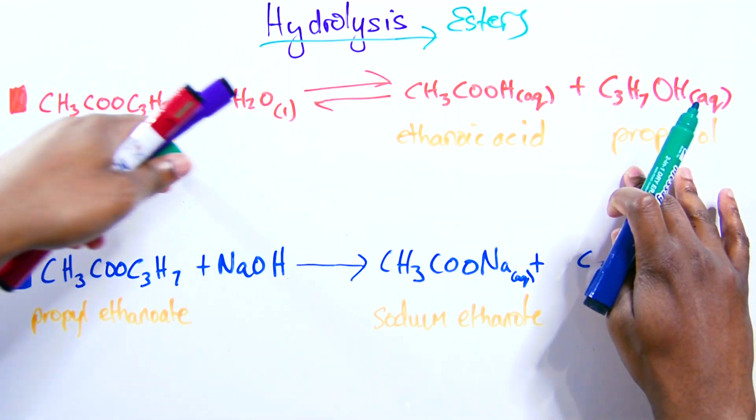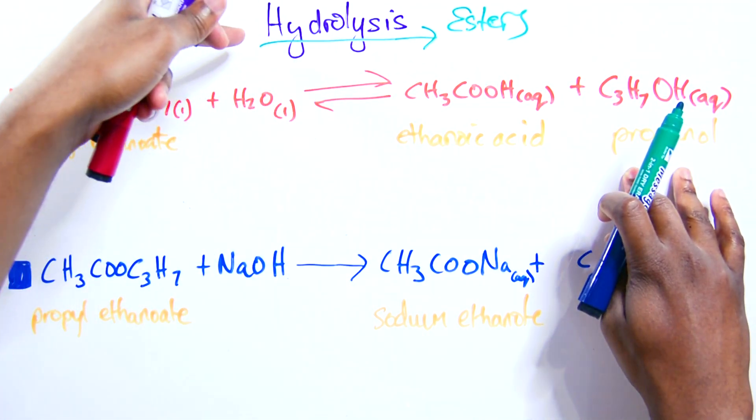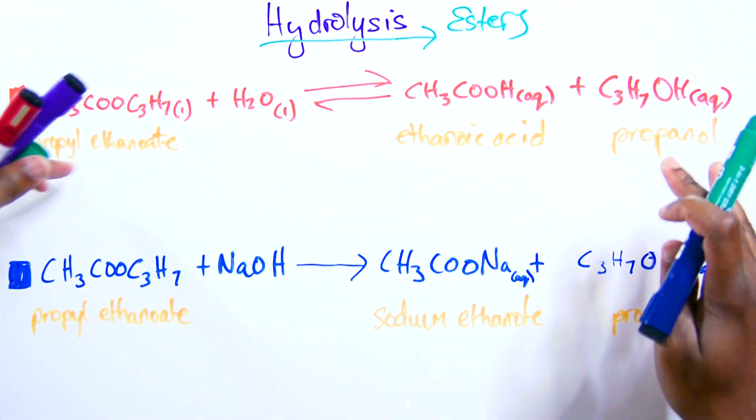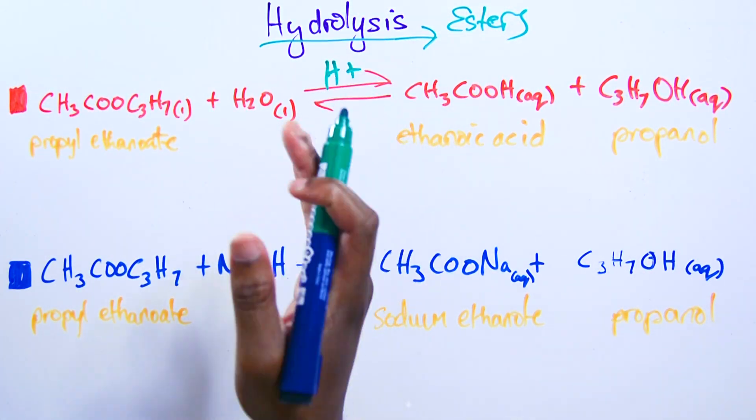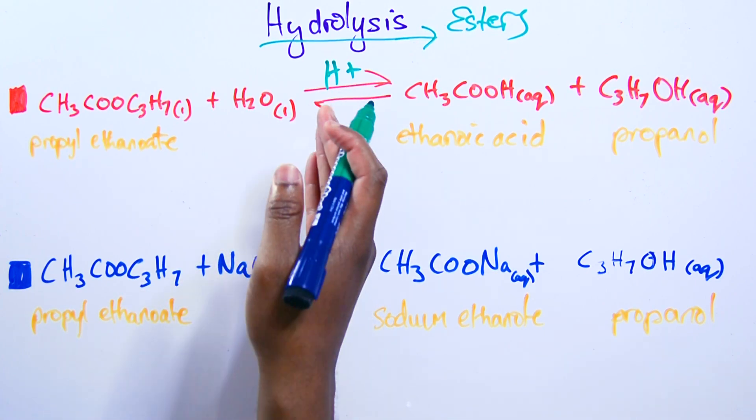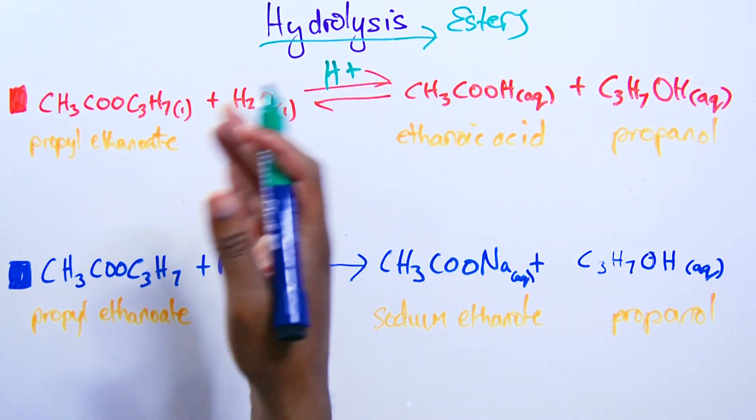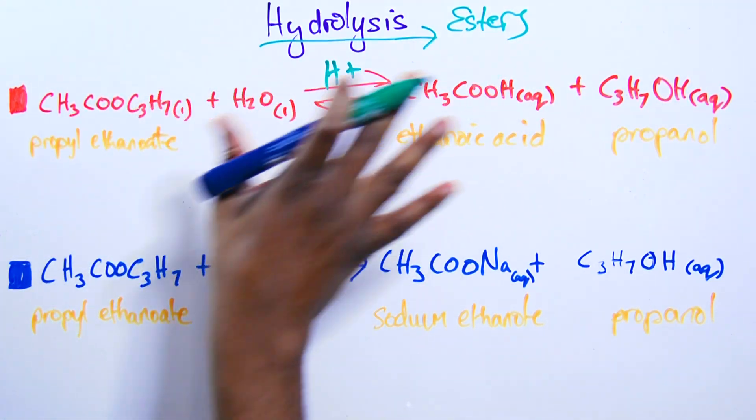This is acidic hydrolysis. Acid hydrolysis. Because this will happen in the presence of H+ ions. So you want to use dilute sulfuric acid or dilute hydrochloric acid or dilute acid here to let this happen.